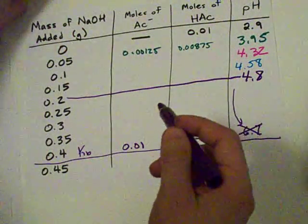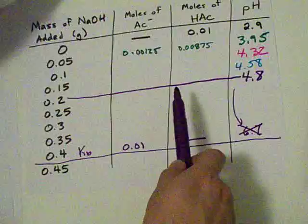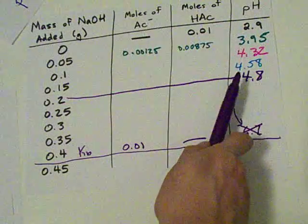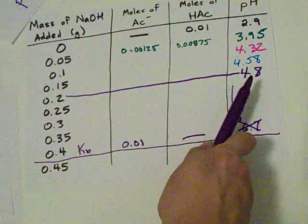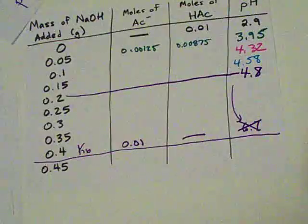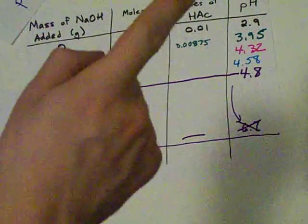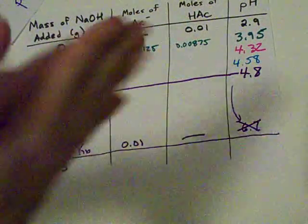The point here is, because of the Henderson-Hasselbalch equation, the pH is more resistant to changes the closer you are to the pKa. Alright, hey guys, that's it. 10 minutes. Nice little timing. Best of luck.